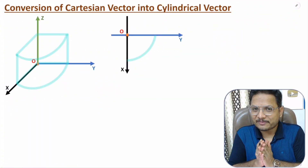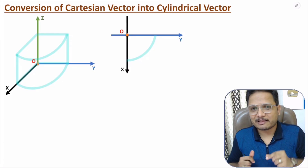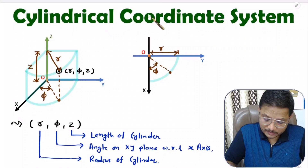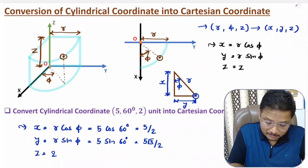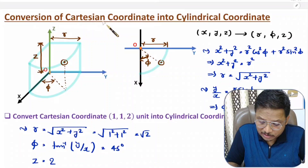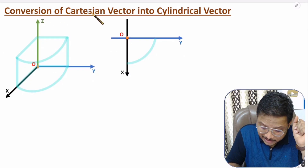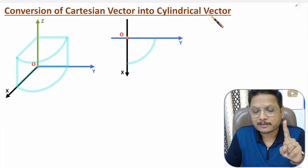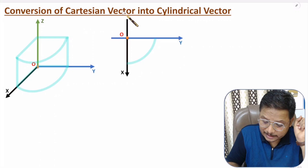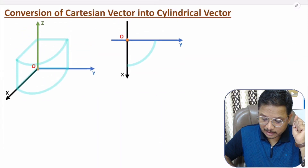Hello friends, welcome to Engineering Funda family. In this video, I will explain conversion of Cartesian vector into cylindrical vector. In my last video, I explained the cylindrical coordinate system, including conversion of cylindrical coordinates into Cartesian coordinates and vice versa. But in this video, I'll explain conversion of Cartesian vector into cylindrical vector — note there is a difference between a vector and a coordinate. At the end, I'll solve one problem based on it. So let us begin this session with the conversion process first.